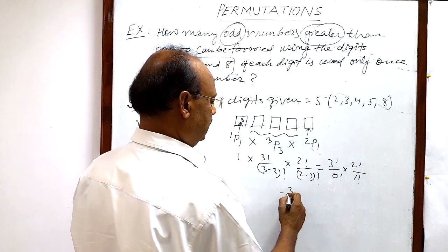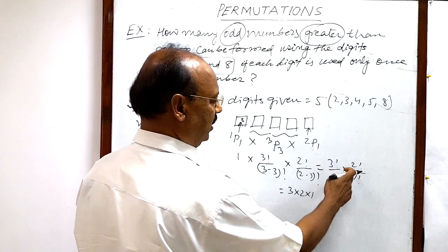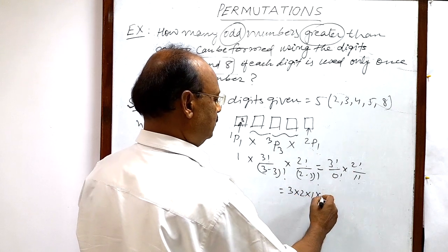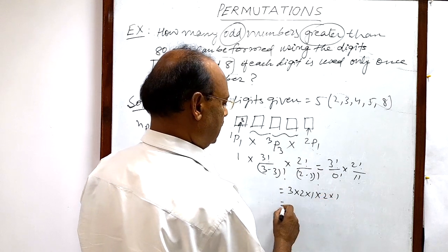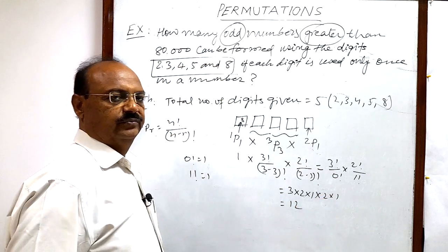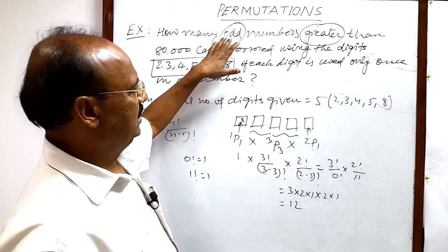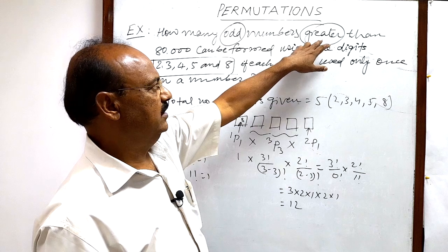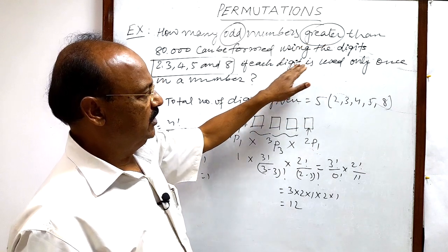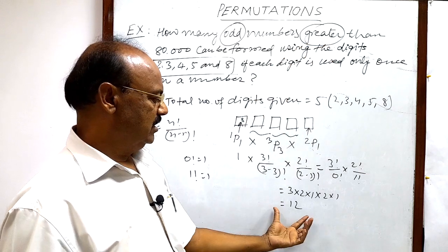So 3 factorial will be 3 into 2 into 1, and here we are getting 2 factorial means 2 into 1, is equal to how much? 12. So total number of numbers fulfilling these conditions - numbers is odd, number is greater than 80,000, and digits are used only once - answer will be 12.